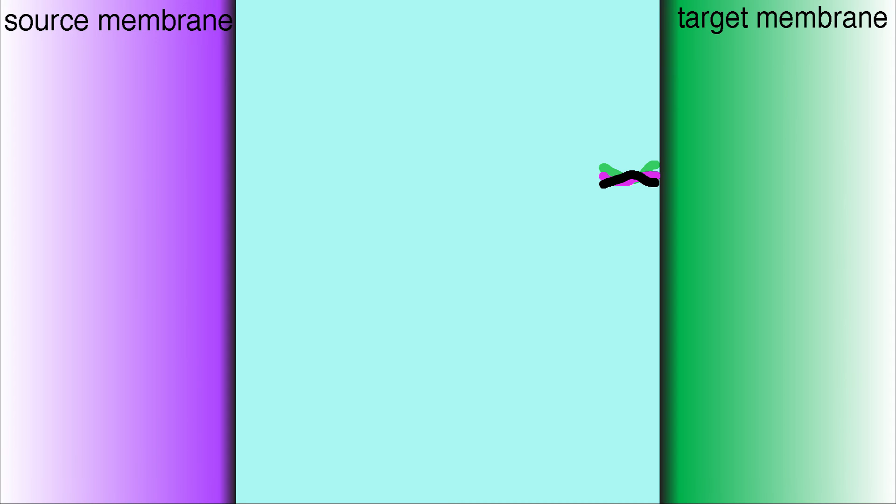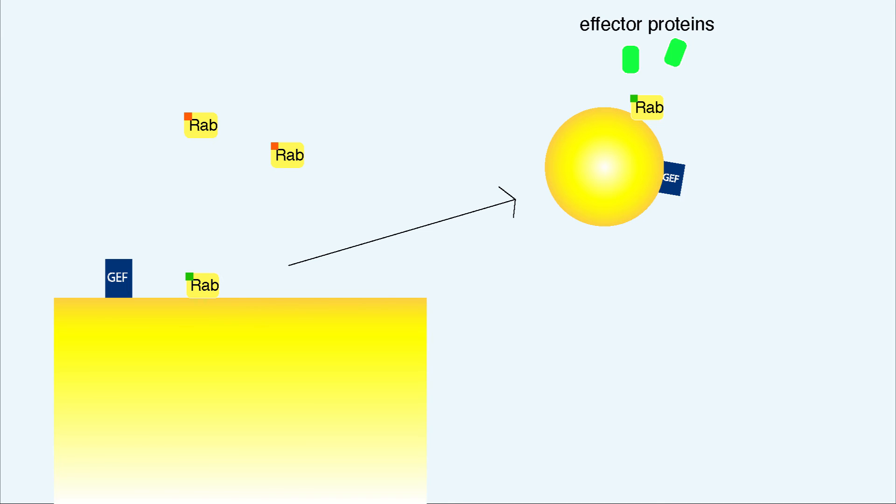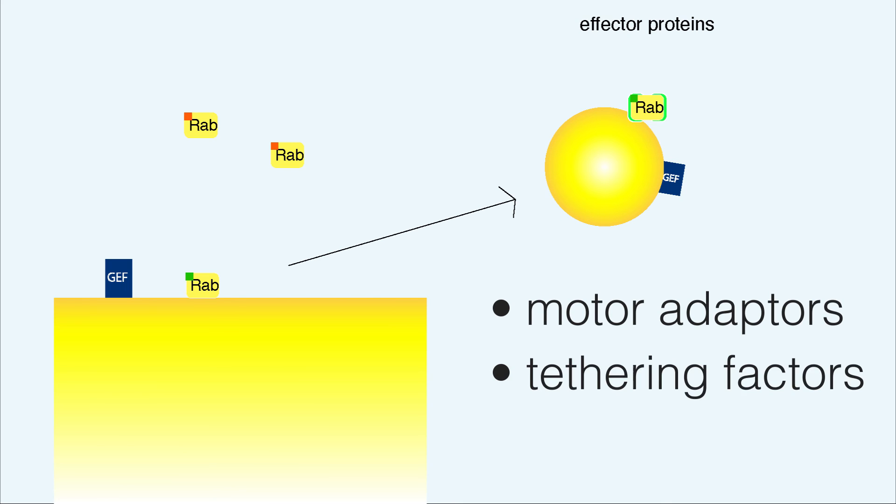So, in summary, after vesicles form, they must be transported, docked, and fused to a target membrane. RAB-GTPs in both the vesicle and target membranes recruit RAB effector molecules, such as motor adapters to transport the vesicles alongside of skeletal elements, and tethering factors to pull the vesicle into a docked position.